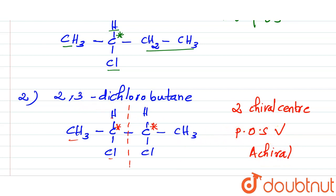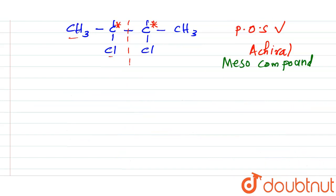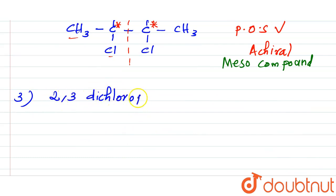So we can say that despite having two chiral centers, this compound is achiral — meaning optically inactive — due to the presence of this plane of symmetry. Therefore, 2,3-dichlorobutane is a meso compound.